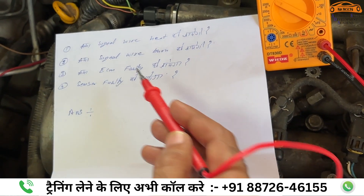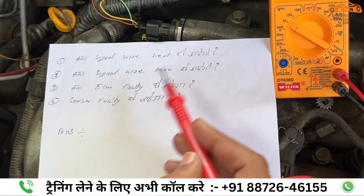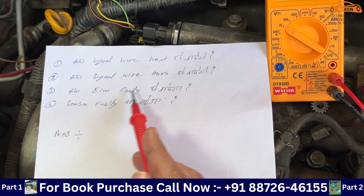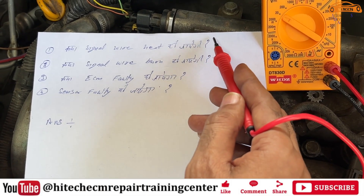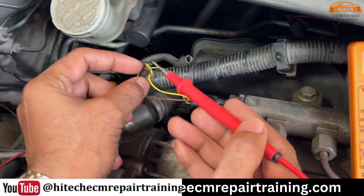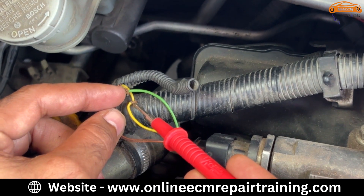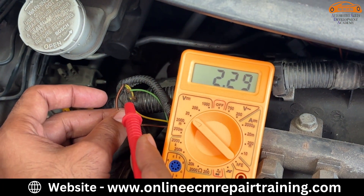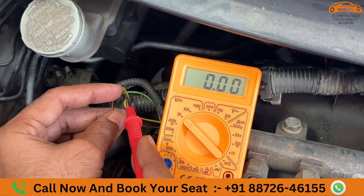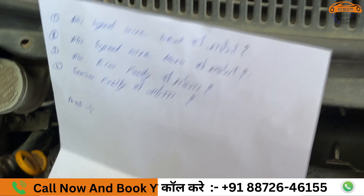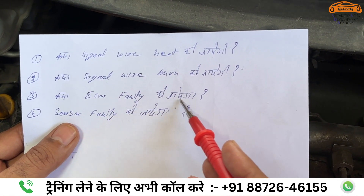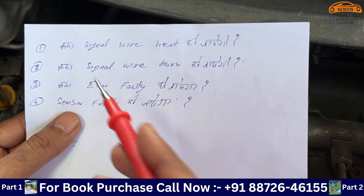These are the steps and questions we have today: What is the signal wire heat? What is the signal wire burn? What is the ECM fault? Is it a sensor fault? There will be 4 options. We will see that our positive wire — see the positive wire here — this is body ground. What is the voltage here? It is 5 volts. If I touch both of them, the questions are: will the signal wire heat, will the signal wire burn, is the ECM faulty, or is the sensor faulty?